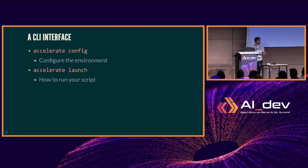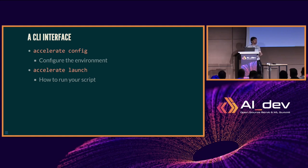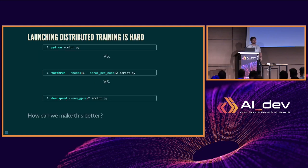When we talk about the command line interface: running things in distributed fashions is very annoying, so we've come up with two solutions — Accelerate Config and Accelerate Launch. The first configures your system to understand how we're running things, and the second is how you launch them.